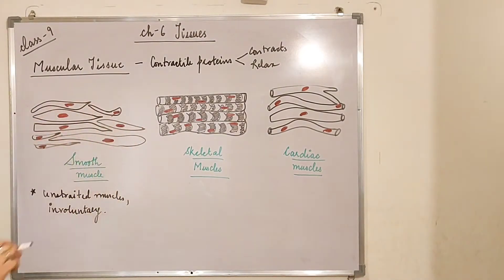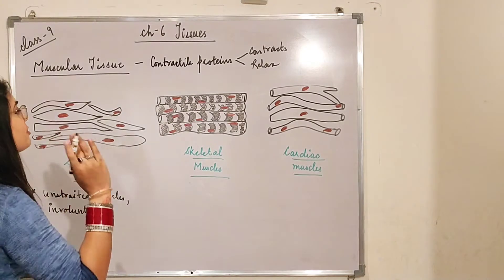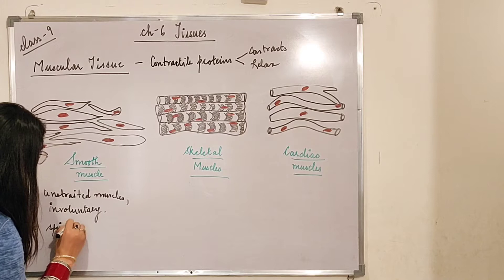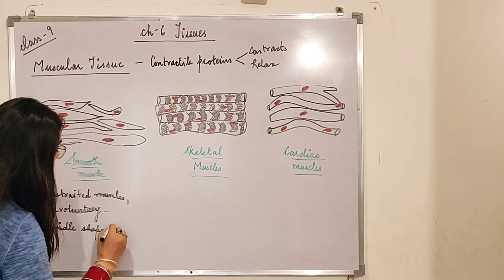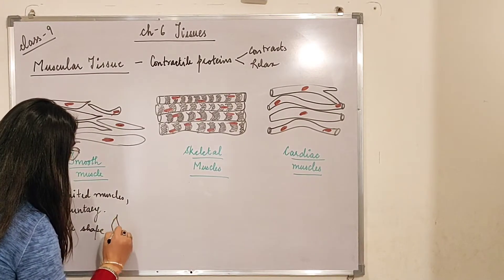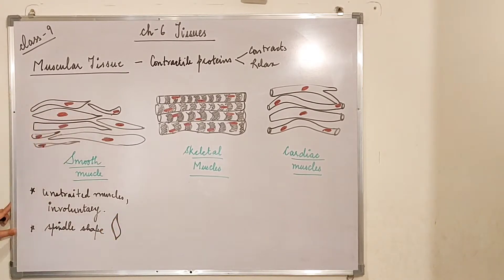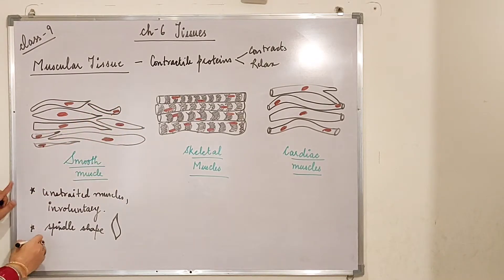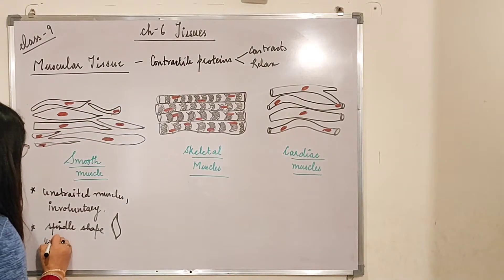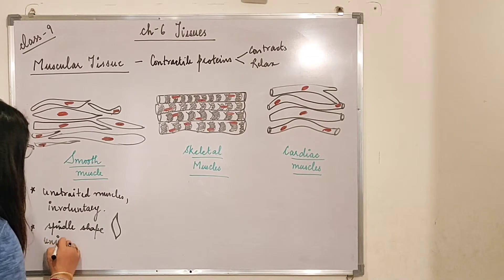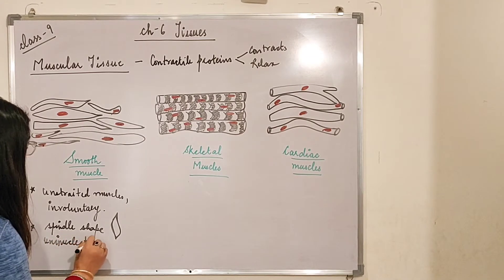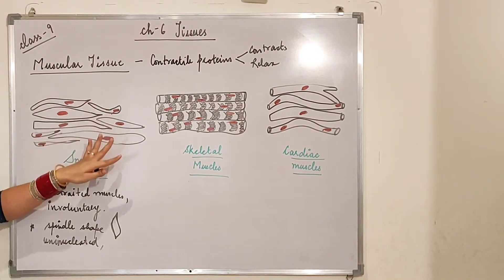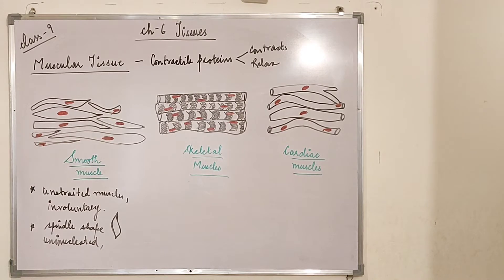Now let's come to the shape of smooth muscle. The shape is spindle-shaped — somewhat like a spindle. How many nuclei are present in a single cell? One — so they are uninucleated. Do they have branches? Looking at the picture, there are no branches, so smooth muscles are unbranched.